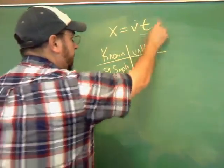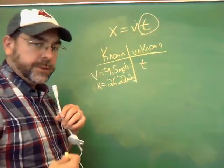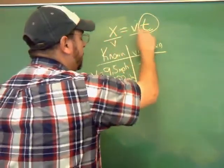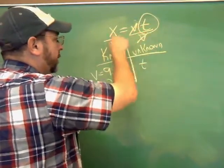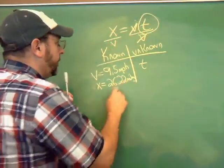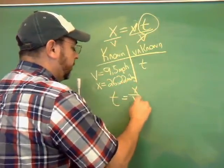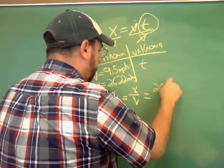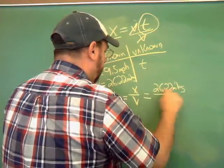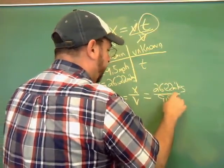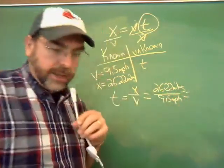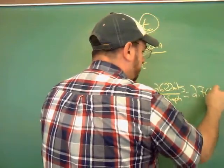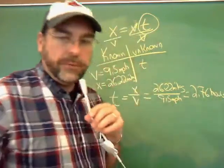What I want to solve for is time. I want to get that all by itself, so I have to do some algebra. I'm going to divide both sides of the equation by velocity. So if I rewrite this, I'm going to say time equals distance divided by velocity. If I do that, 26.22 miles divided by 9.5 miles per hour, and I'm going to get an answer in hours. If I do this on my calculator, I get 2.76 hours. That's a pretty fast marathon.